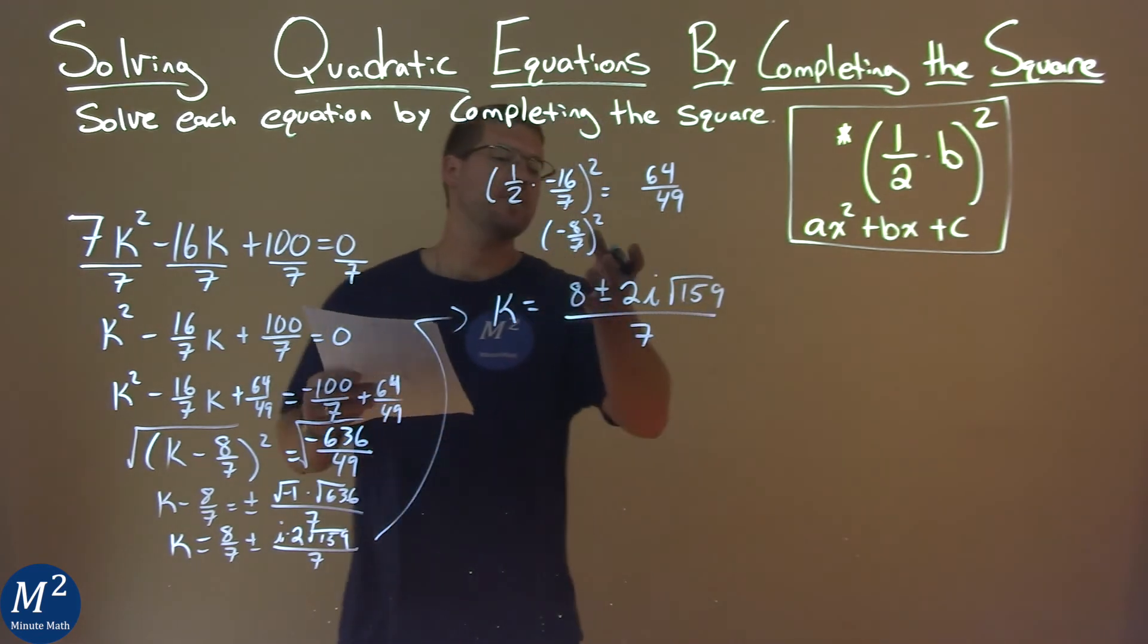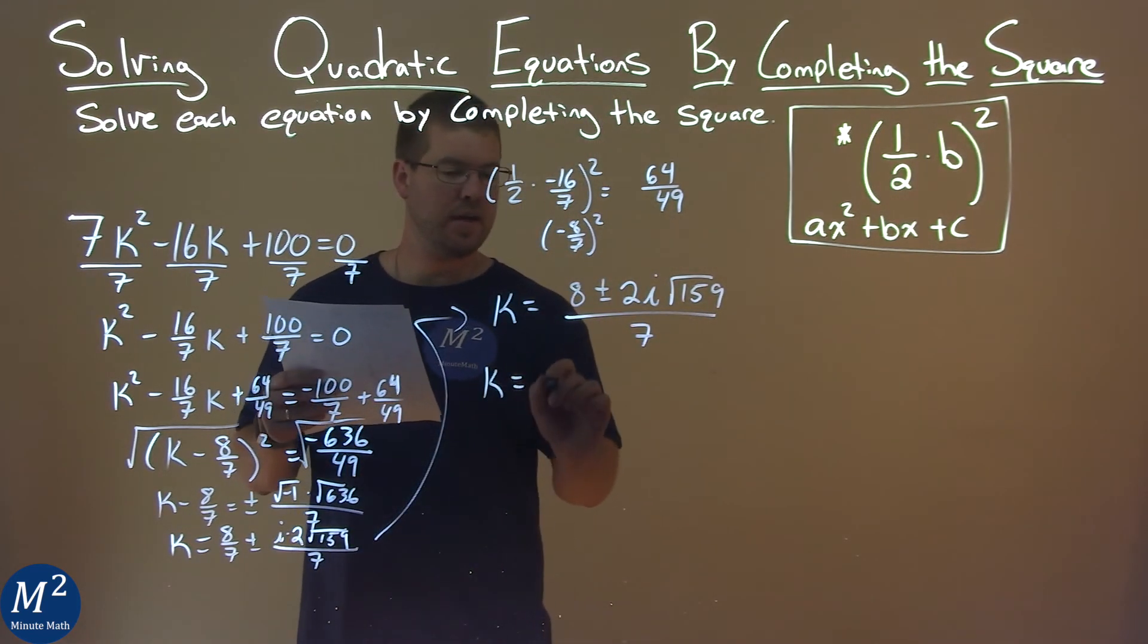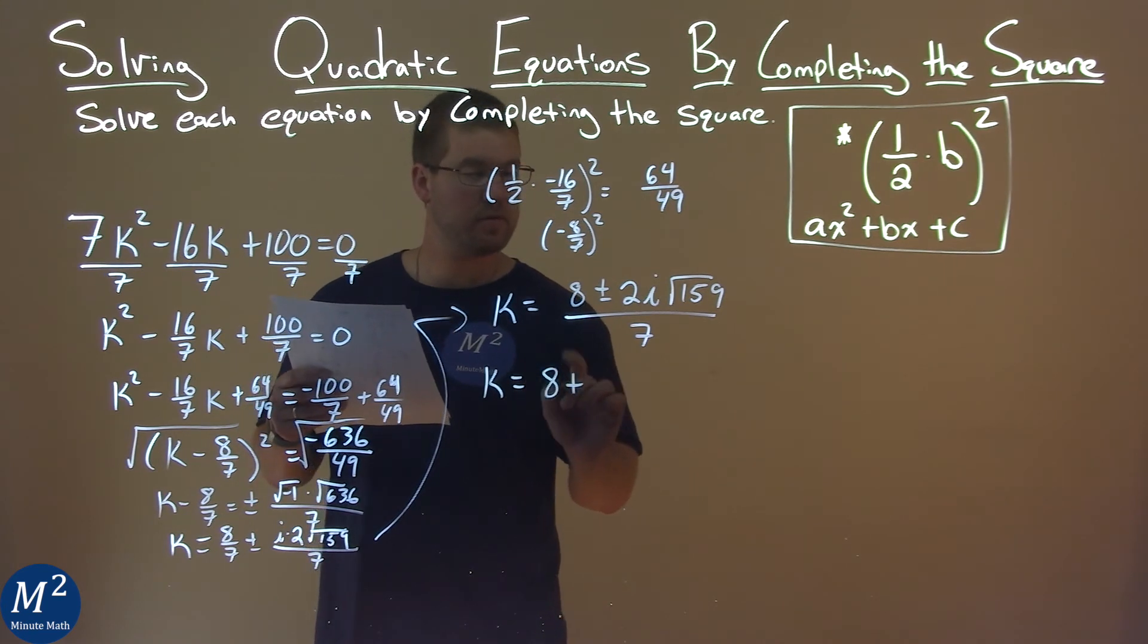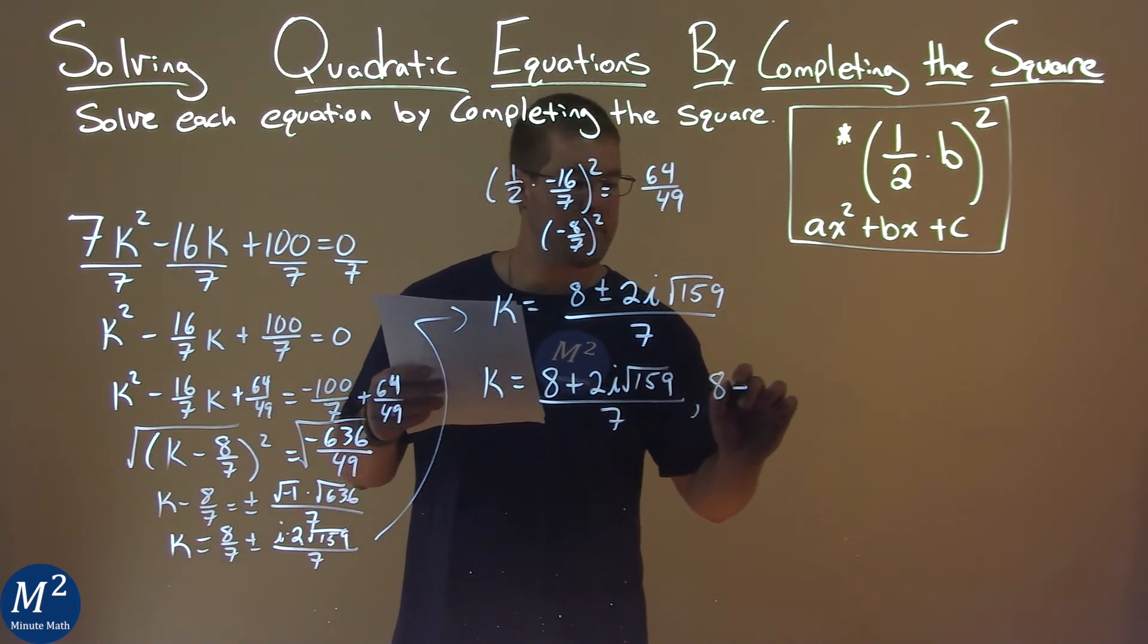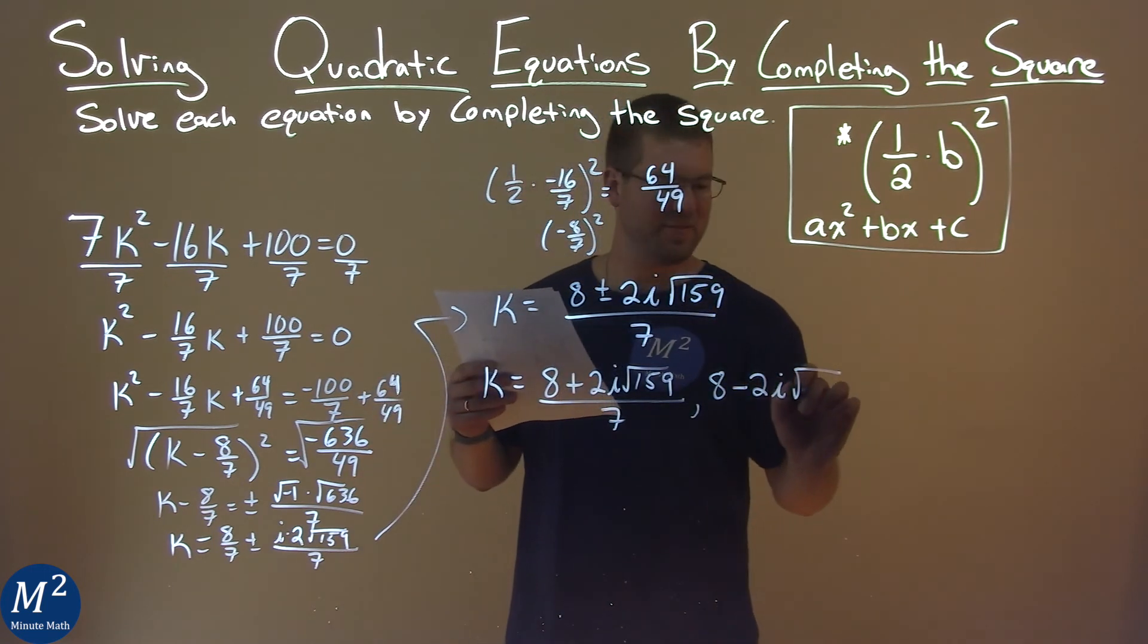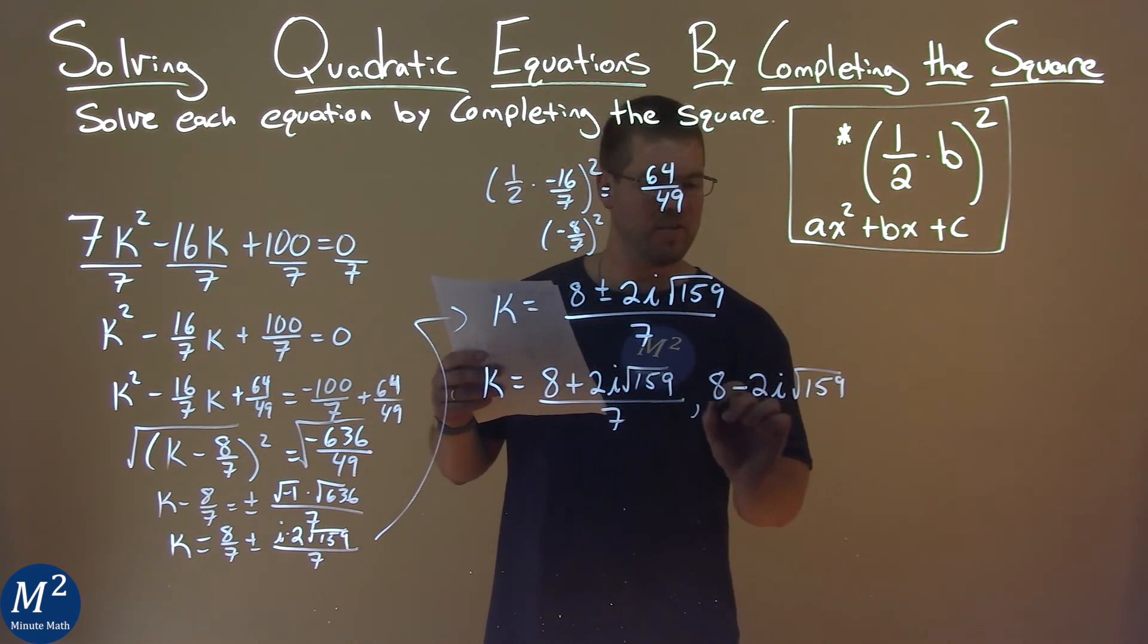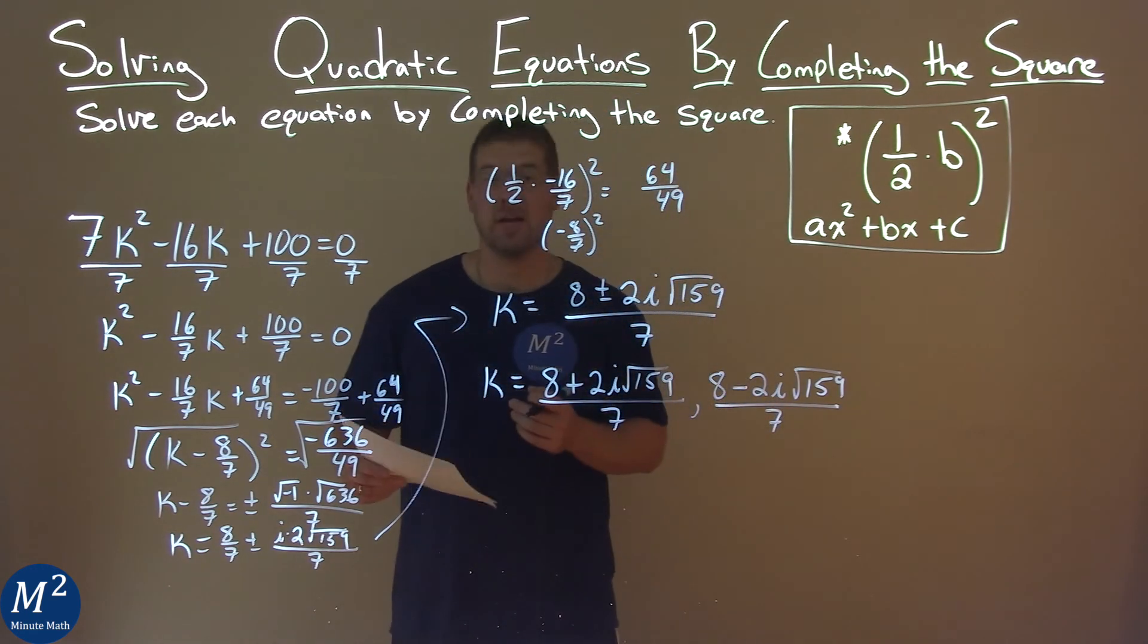Now, this represents two numbers, so we can write them individually, as k equals 8 plus 2i square root of 159 over 7, and then 8 minus 2i square root of 159 over 7, and these two are our final answers.